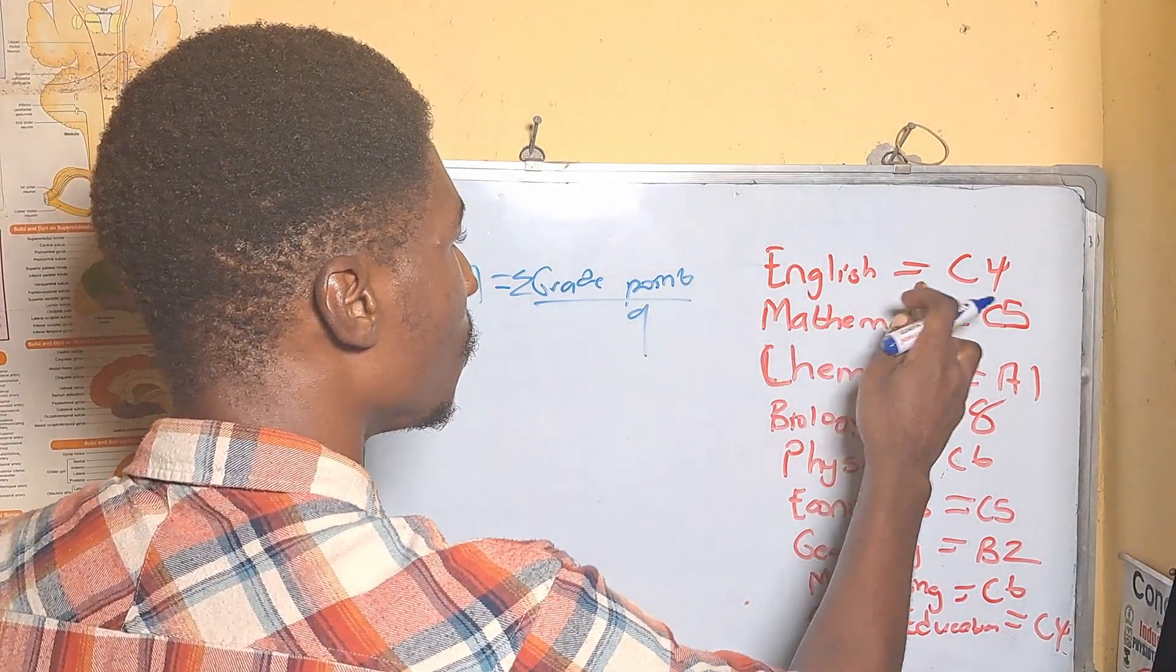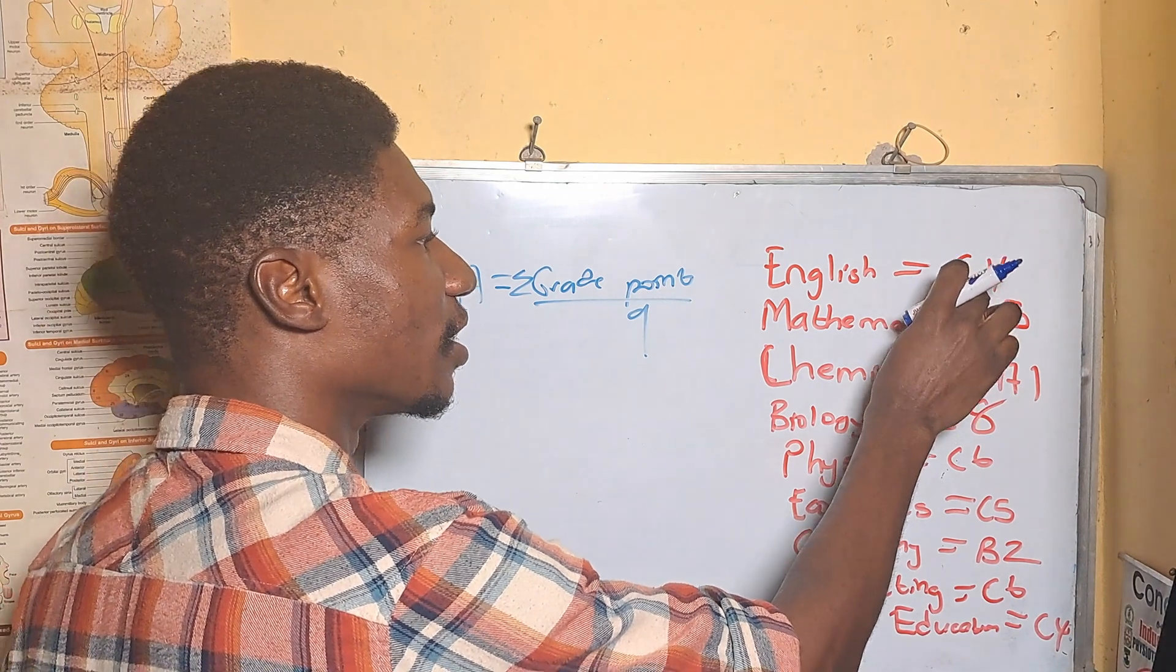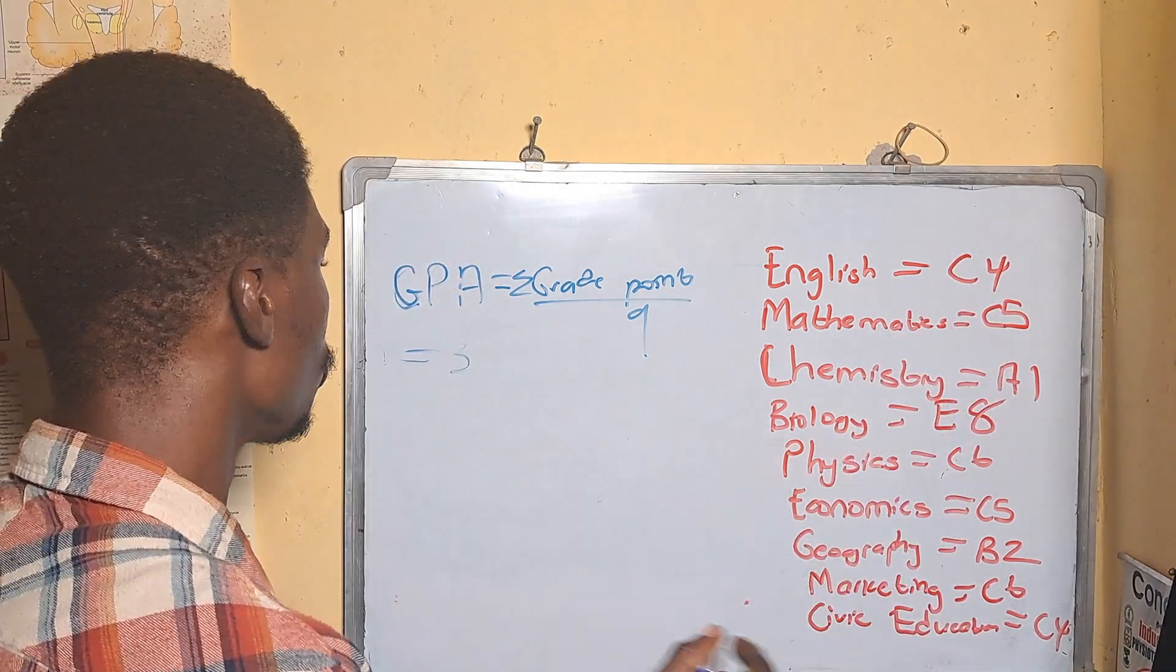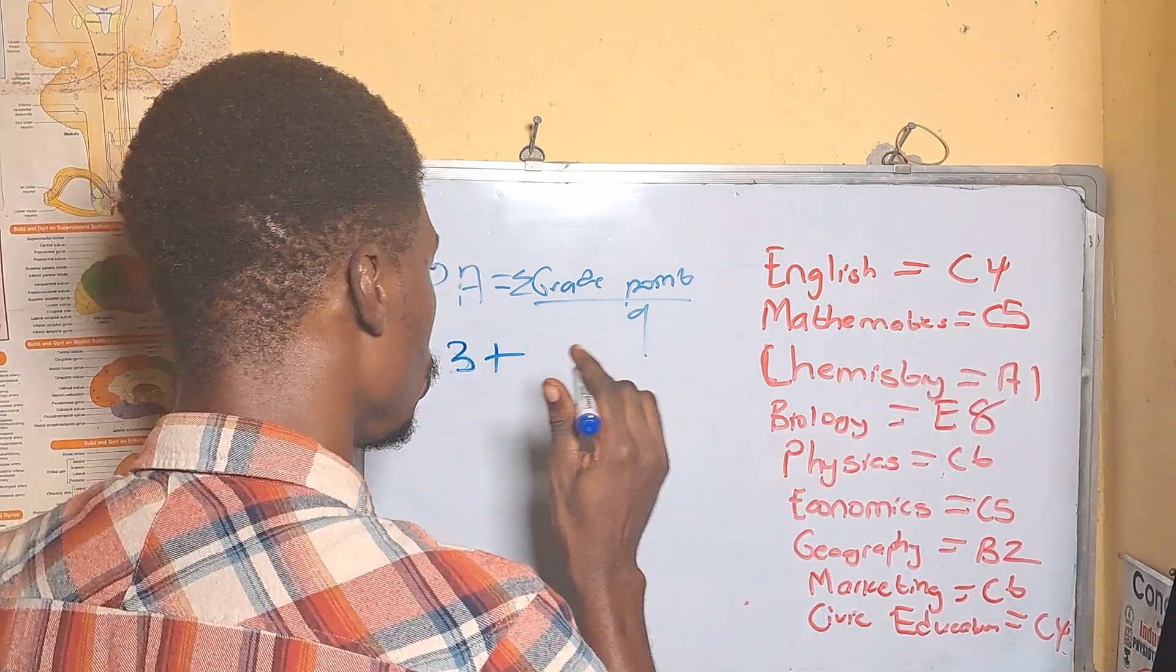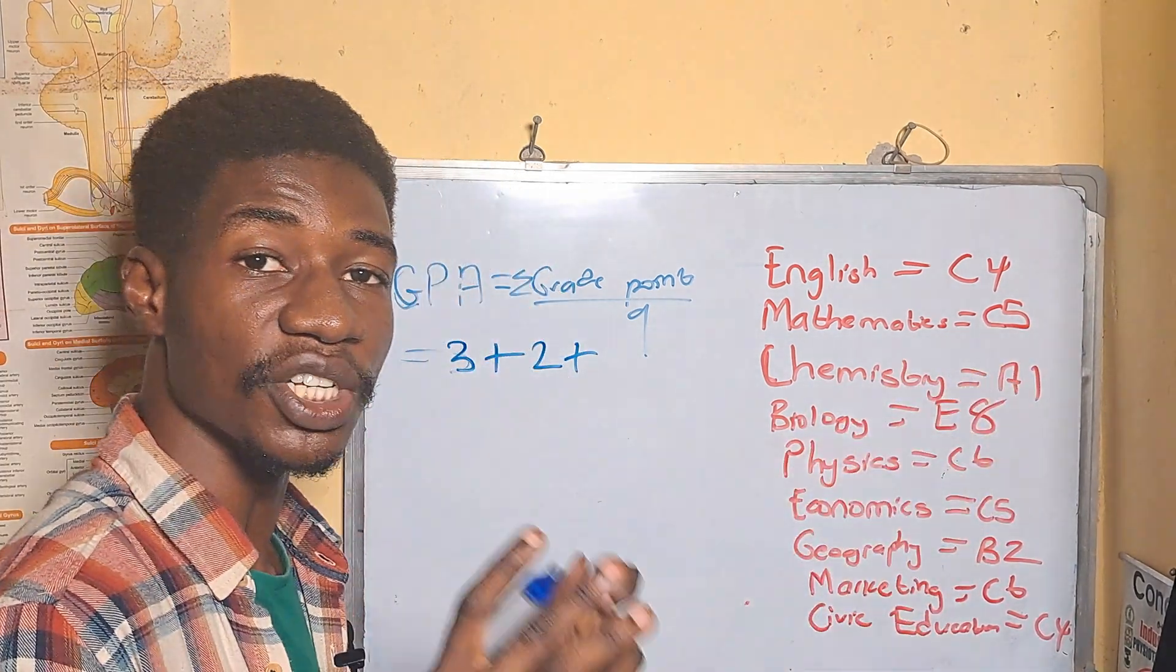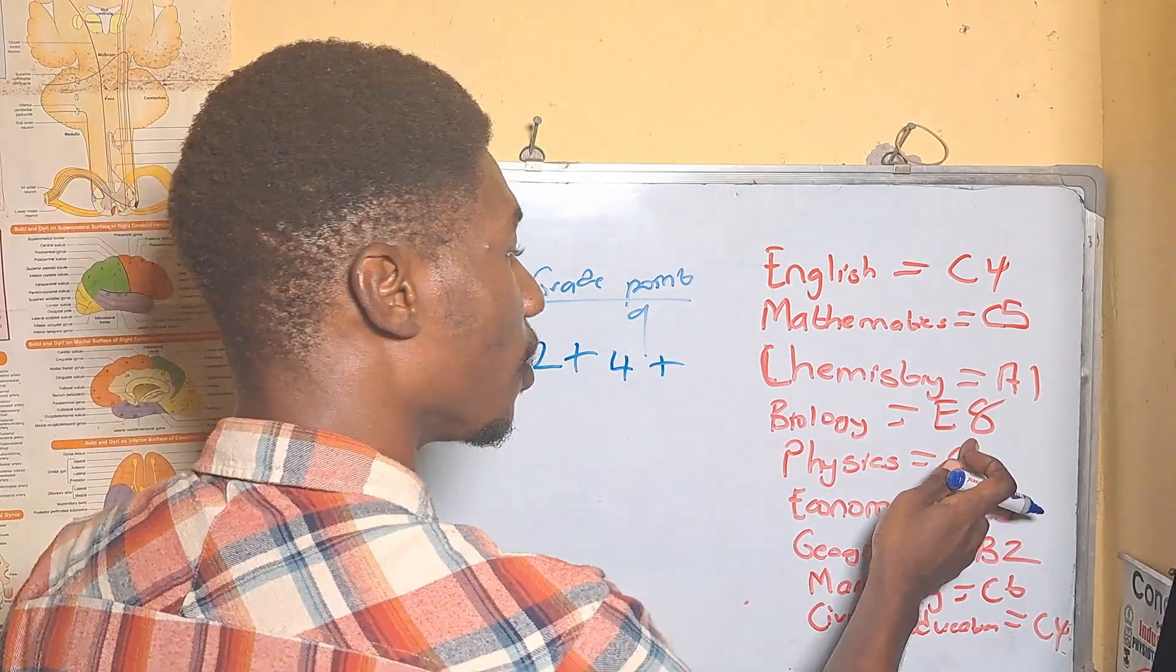The grade for English language is C4, and the grade point for C4 is three. Plus mathematics is C5 which is two, and chemistry is A1 which is four points. Plus biology is E8 which is one.